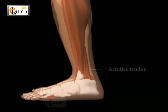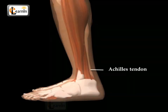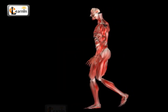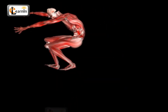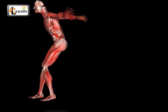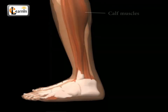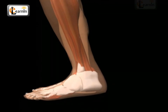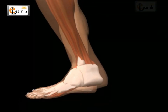The Achilles tendon is the most important tendon in the foot for walking, running, and jumping. The Achilles tendon attaches the calf muscles to the heel bone. This tendon helps us to rise up on our toes.